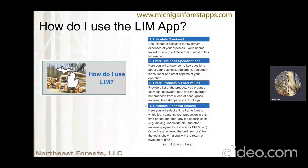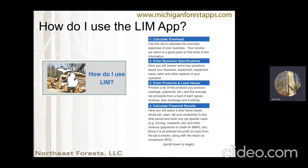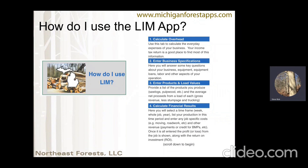So how do I use the LIM app? I'm going to show you a series of screenshots from the app before I show you a live demo. First, you'll calculate overhead — put in some everyday expenses for your business, taken for the most part right from your income tax return. Then you'll enter some business specifications. After that, you'll enter products and load values — the types of products you produce and what you typically net on each load, net of any trucking charges or stumpage. Finally, you'll calculate the financial results.